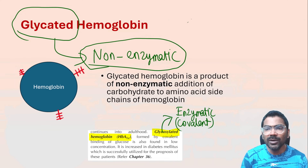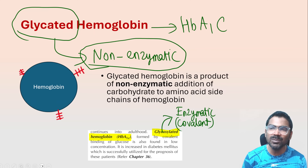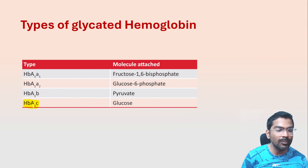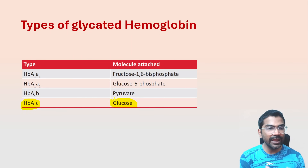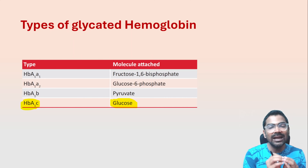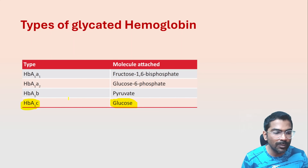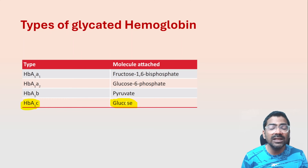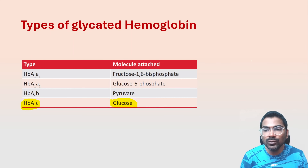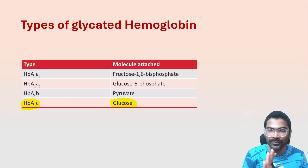HbA1c is a type of glycated hemoglobin. Glycated hemoglobin means hemoglobin to which carbohydrate is non-enzymatically attached. Based on which carbohydrate is attached, there are many types of glycated hemoglobin. Out of these, HbA1c is the most abundant glycated hemoglobin, which is why we use HbA1c and glycated hemoglobin interchangeably.